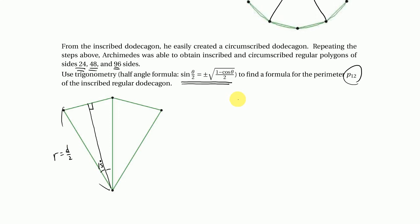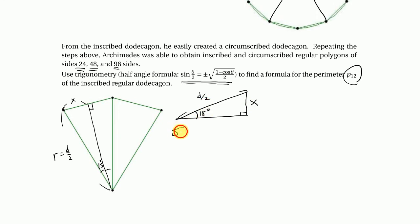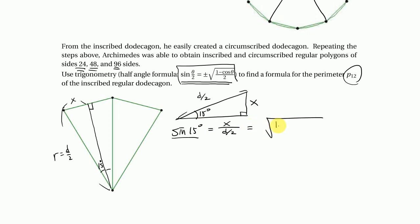In that small triangle, the hypotenuse is D/2 and the opposite side is X, with the angle being 15 degrees. So sin(15°) = X / (D/2). By the half-angle formula, sin(15°) = √((1 − cos30°)/2). Since everything is positive here, we only consider the positive case.